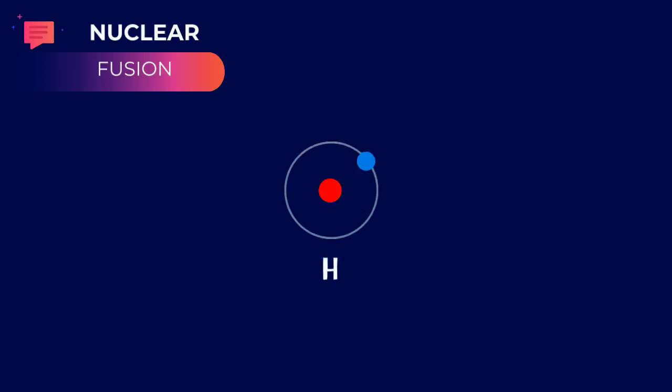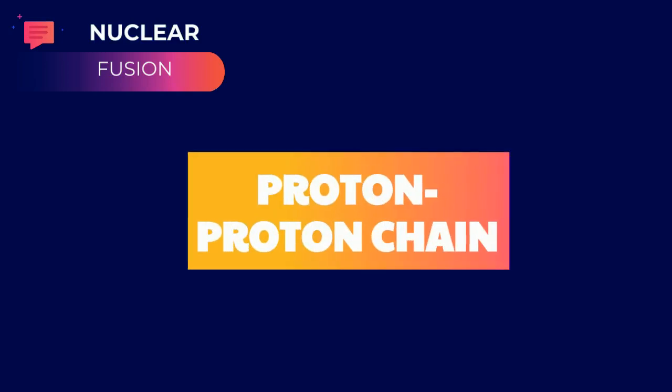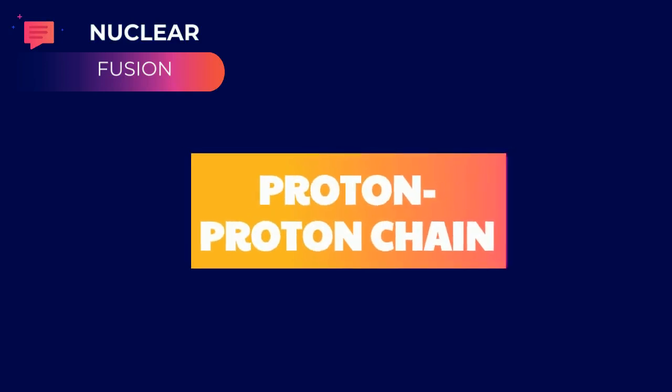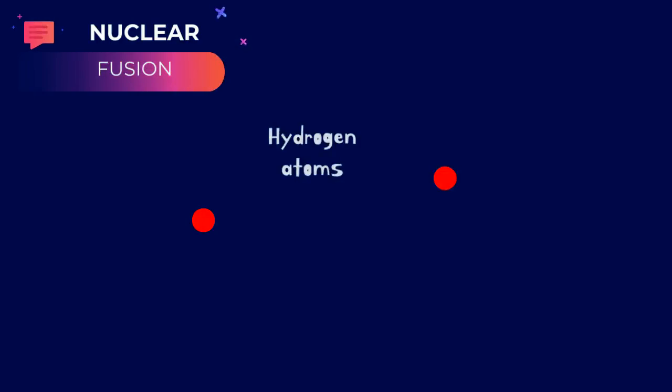The cycle for which we associate nuclear fusion is the proton-proton chain or cycle. First, two protons collide to form deuterium. Deuterium is an isotope of hydrogen. Then another proton collides with the deuterium and they form an isotope of helium, helium-3.